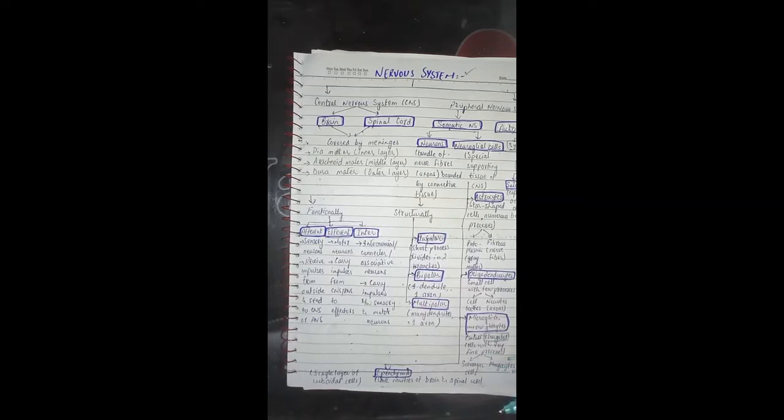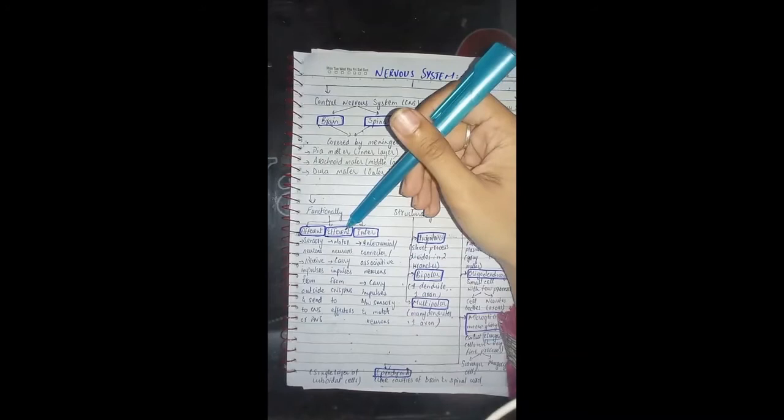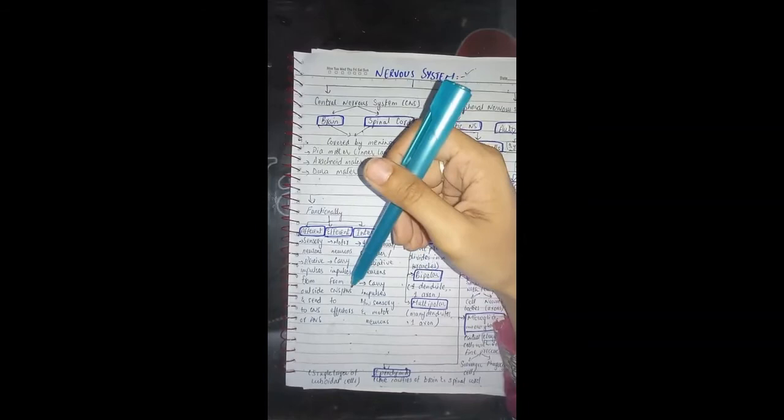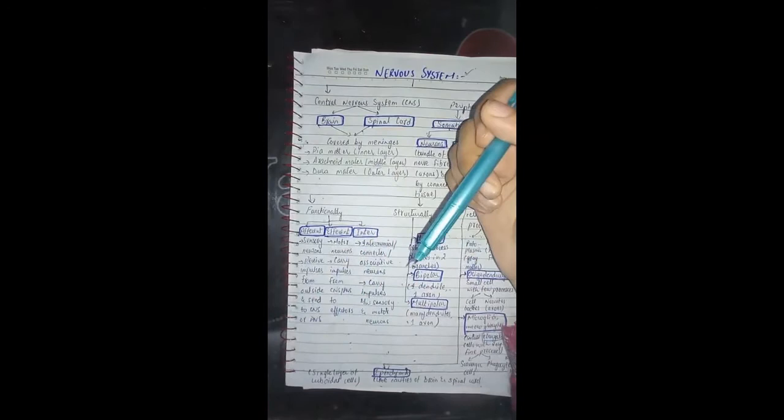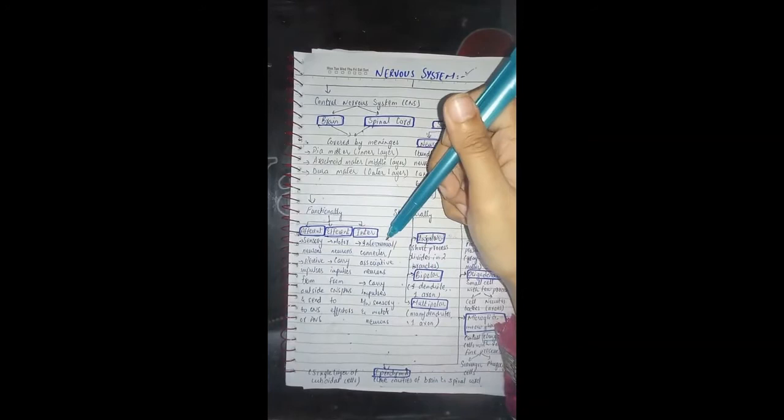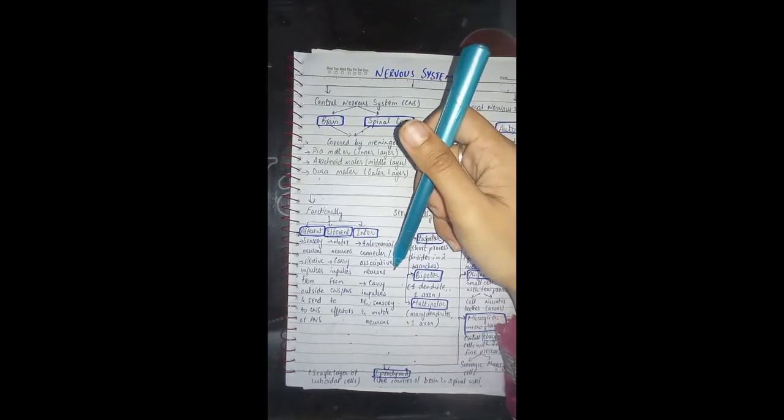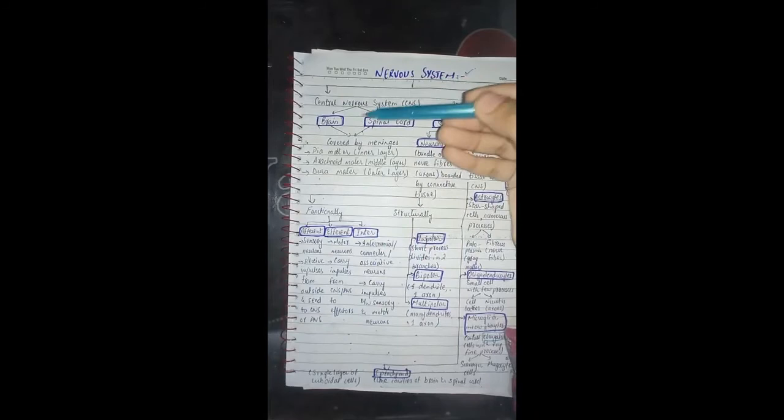Efferent neurons are called motor neurons. They carry signals from the central nervous system or peripheral nervous system to effectors. There are also associative neurons, so we have sensory and motor neurons which carry impulses.